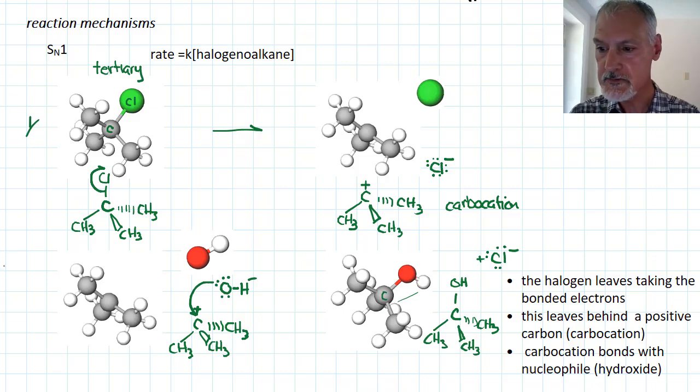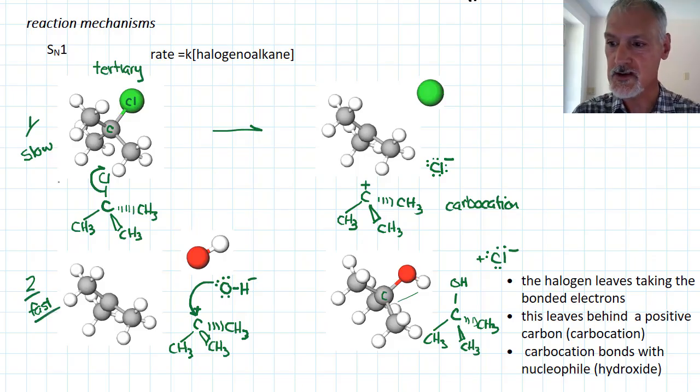So this occurs in a two-step mechanism. The first step of this reaction is the slowest step. When we wait for those electrons to leave this site and create the carbocation, our second step is extremely fast. From our unit on the rates of reaction, we know that the slowest step determines the rate of the reaction. And my slowest step here involves one halogenoalkane. That's why the rate of SN1 mechanisms depends on a constant times the concentration of the halogenoalkane.